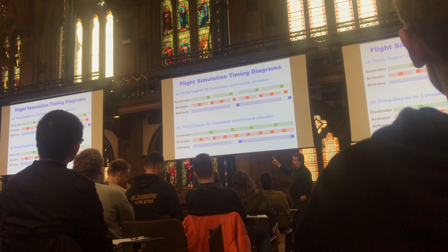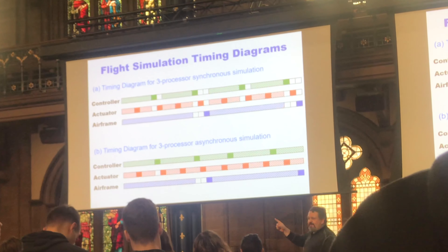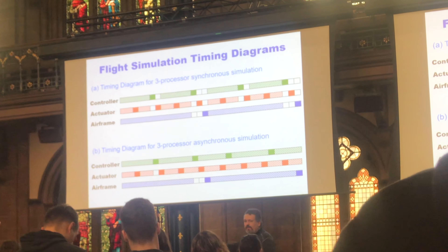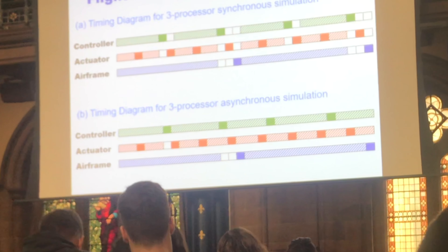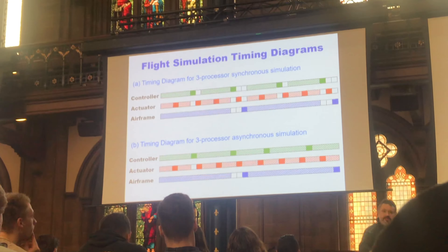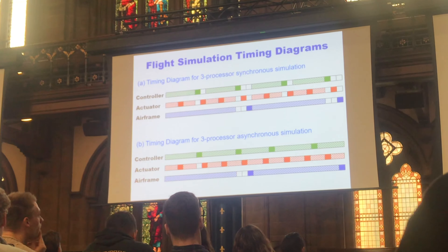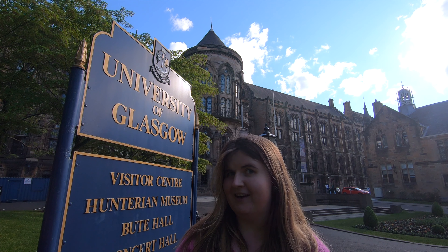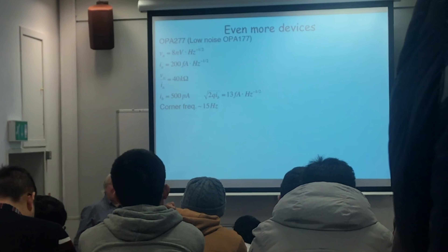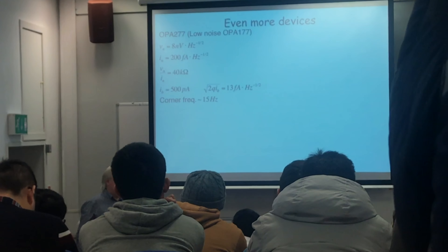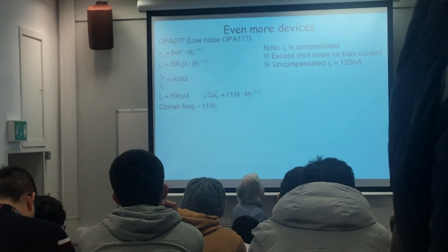Tuesday. I learned about flight simulators and simulation of engineering systems. The controller is given priority because it's the first one that has to do the calculation — the controller has to provide the control signal that drives the actuator. Also a bit about bias current and electronic system design: 500 picoamps of bias current arises when compensated, about 100 nanoamps of bias current.